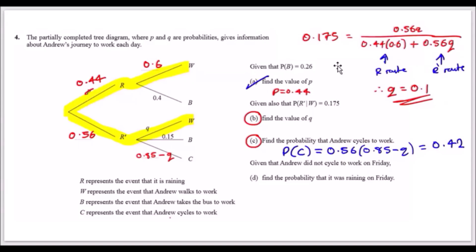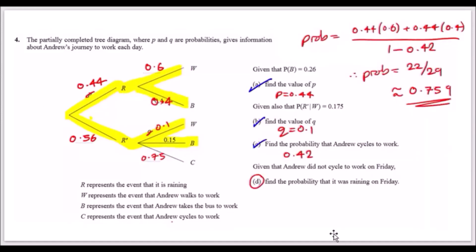Part (c): find the probability that Andrew cycles to work. Cycling (C) is reached by following the 0.56 branch times (0.85 − q). Substituting q = 0.1: 0.56 × 0.75 = 0.42. So the probability Andrew cycles to work is 42%.